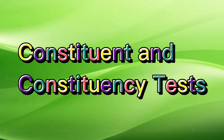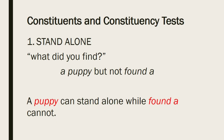The last topic for this video is constituents and constituency tests. The natural groupings or parts of a sentence are called constituents. Various linguistic tests reveal the constituents of a sentence. The first test is the stand-alone test: if a group of words can stand alone, they form a constituent. For example, the set of words that can be used to answer a question is a constituent. In answer to the question 'What did you find?' a speaker might answer 'a puppy,' but not 'found a.' A puppy can stand alone, while 'found a' cannot.